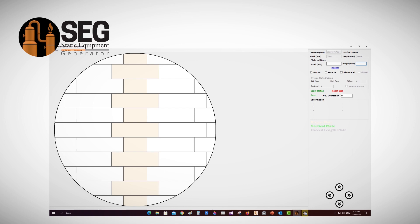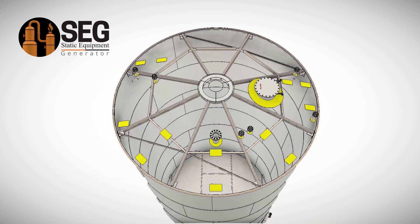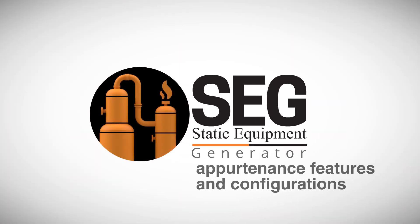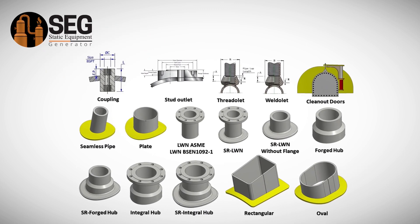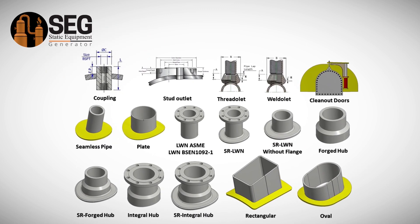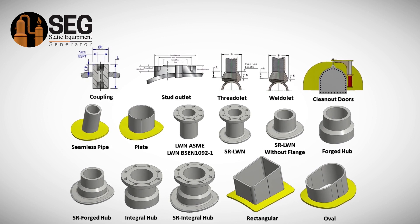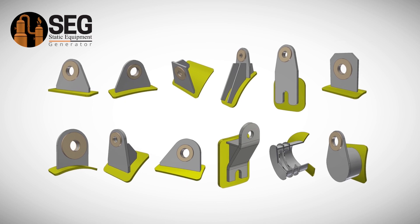A special tool for roof and bottom plates arrangement. Different types of roofs are supported, like radial arranged plates and dome roof. SEG supports a wide range of appurtenance features and configurations. Internal and external components are included: more than 30 types of nozzles, clean-out doors, couplings, stud outlet, weld-o-let, and thread-o-let. More than 12 types of lifting lugs and trunnions.